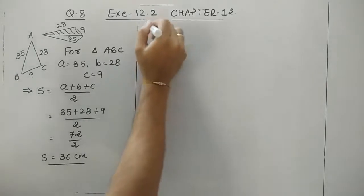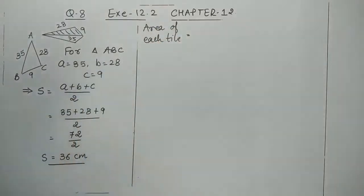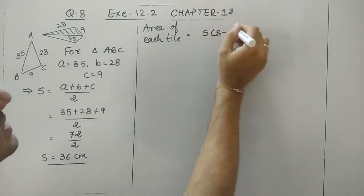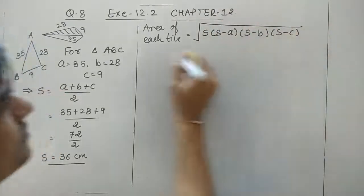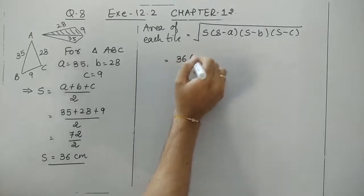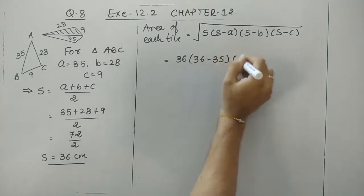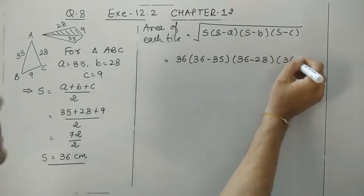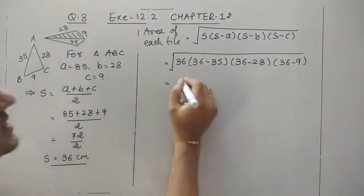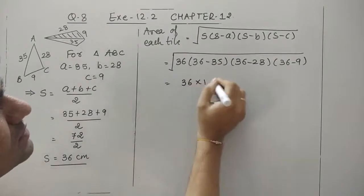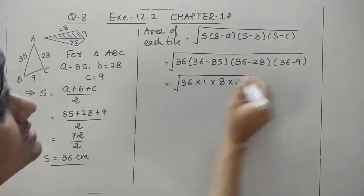Let's find the area of each tile. There are 16 tiles in total. Using Heron's formula: area equals square root of s(s−a)(s−b)(s−c) = square root of 36 × (36−35) × (36−28) × (36−9) = square root of 36 × 1 × 8 × 27.